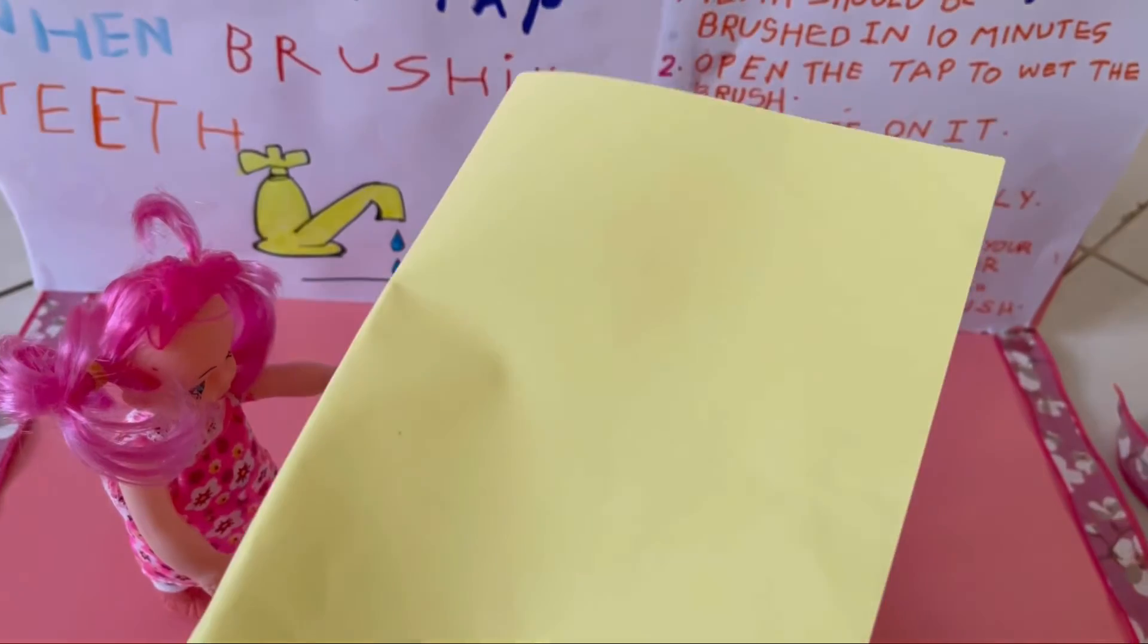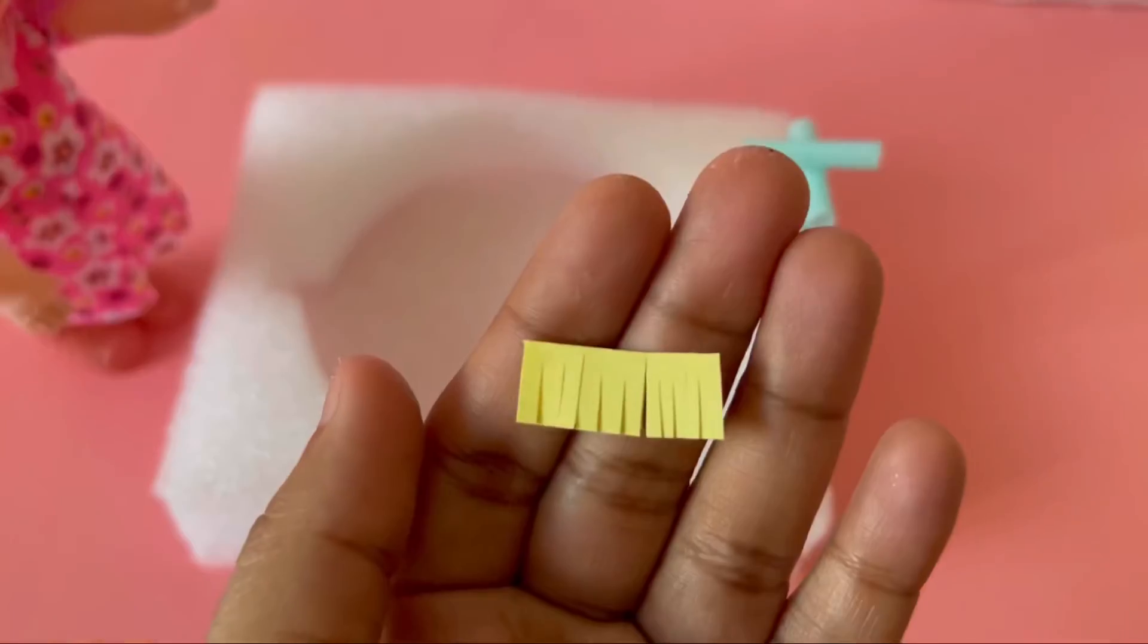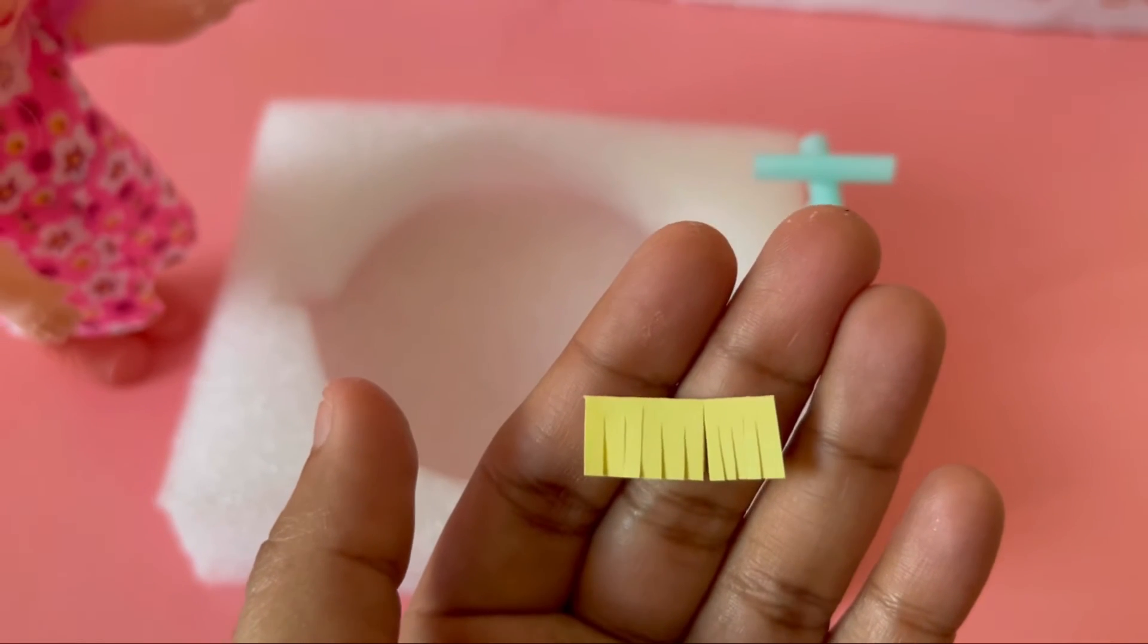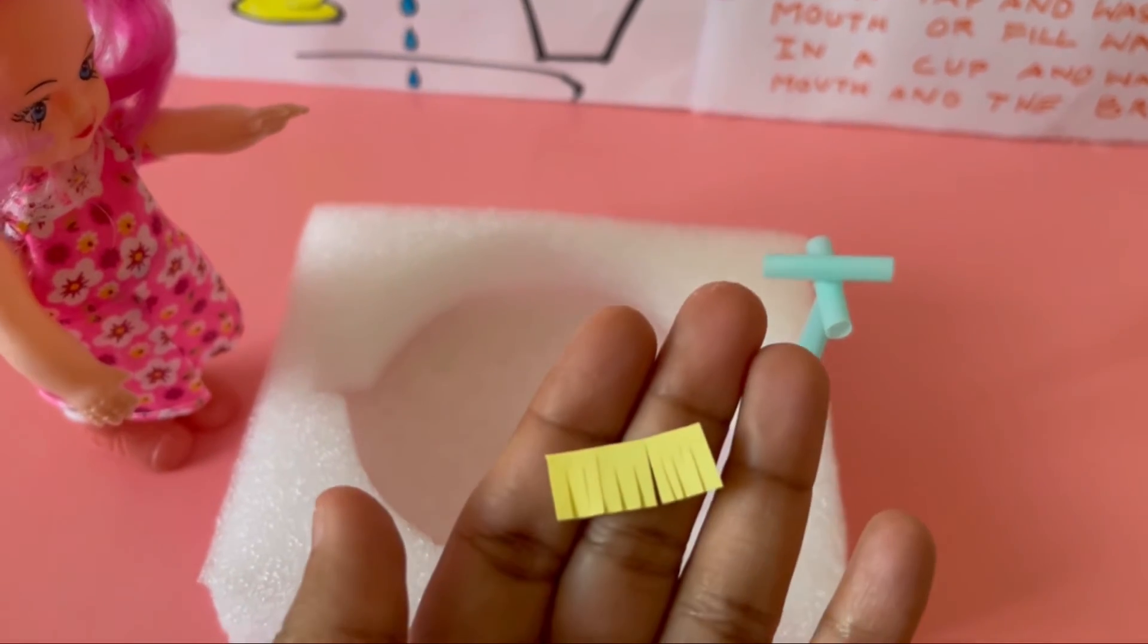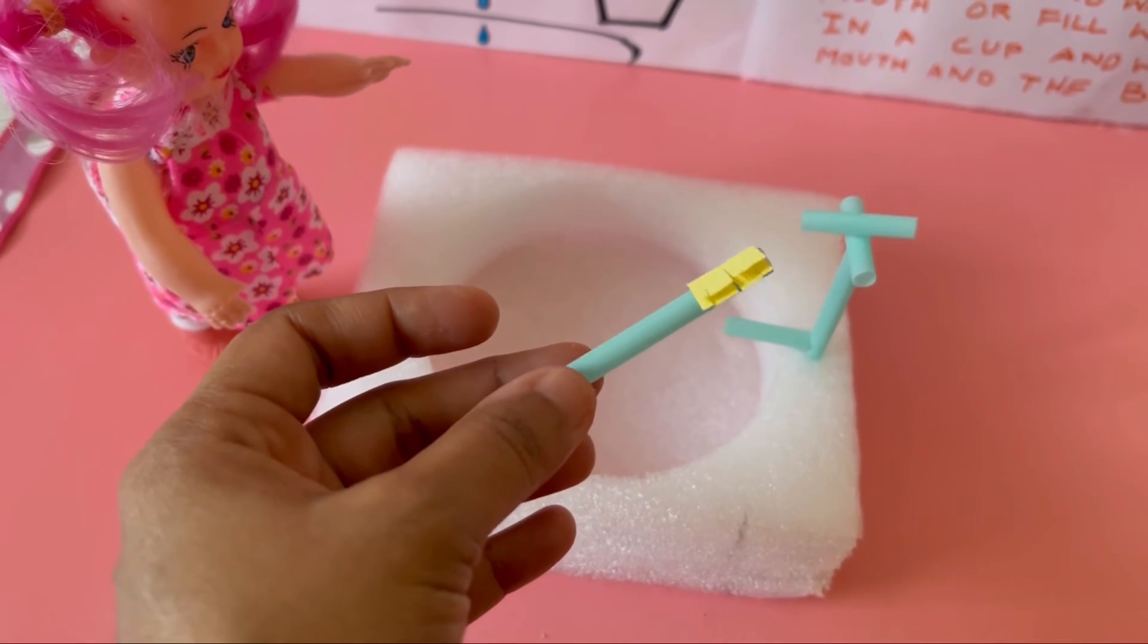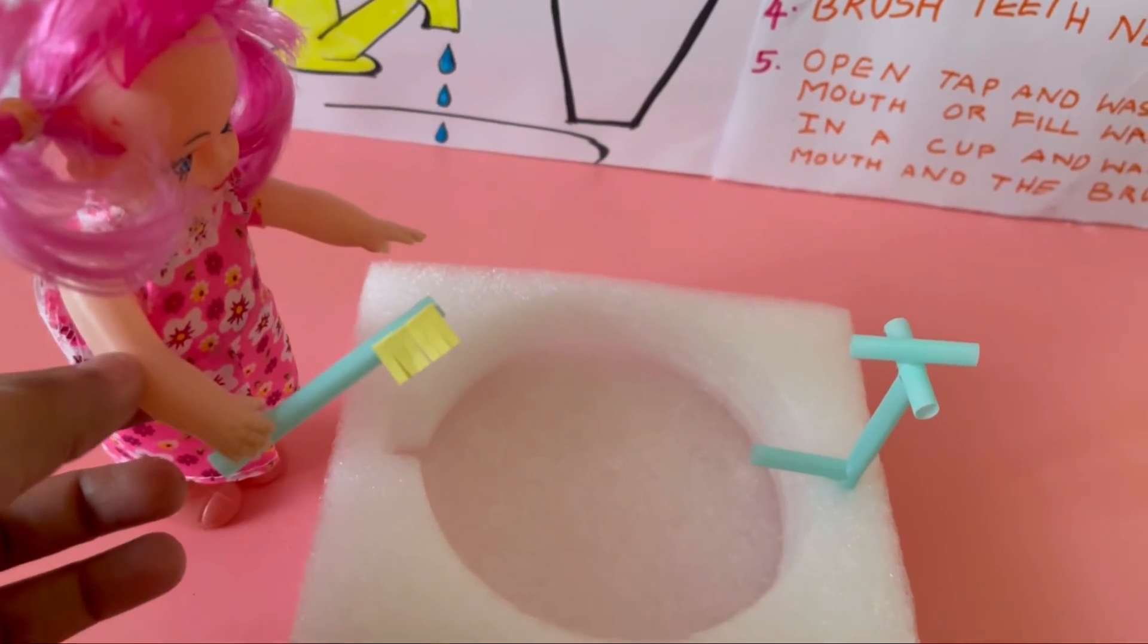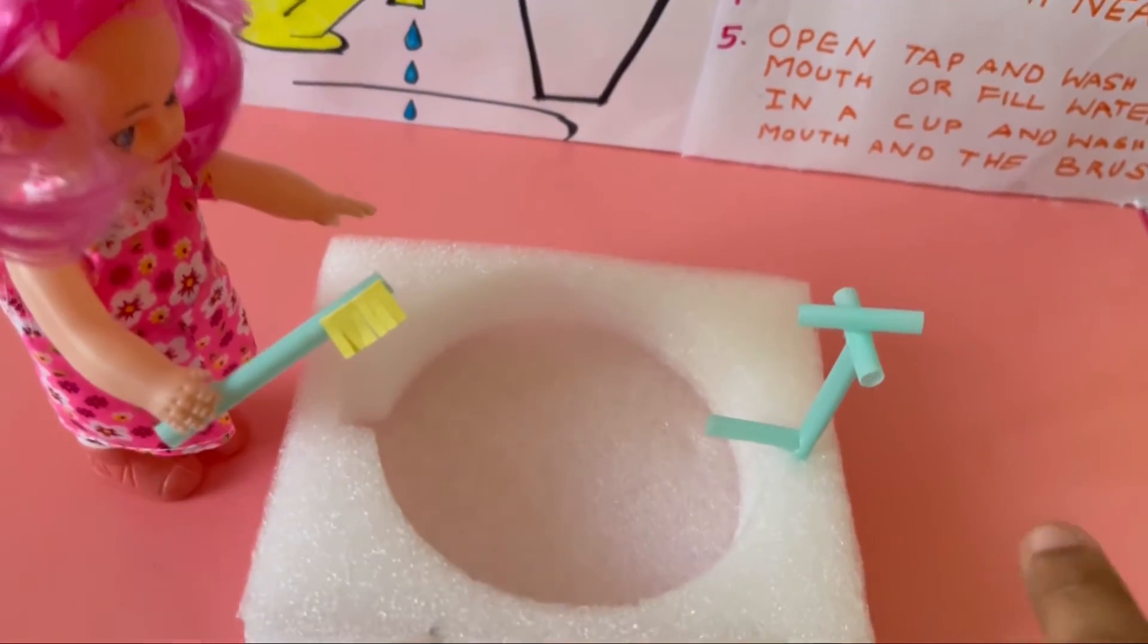And now let's make the brush. For that, take a yellow craft paper or any color. Take another straw and make it into two pieces, like the handle of the brush. And I've made the bristles and stick it this way. And now stick the brush in the doll's hand firmly with some glue.